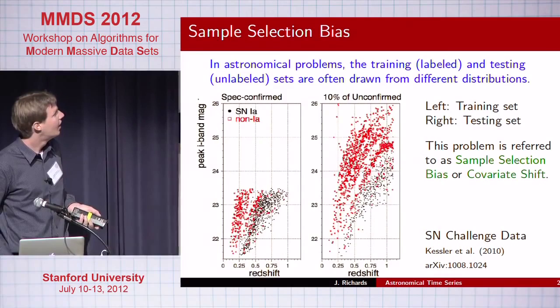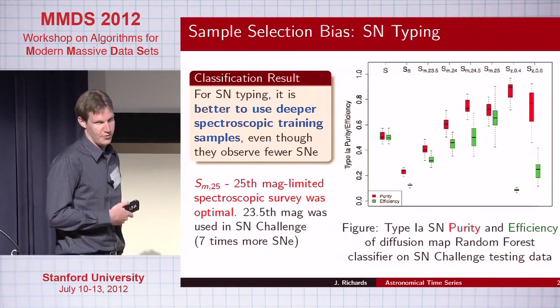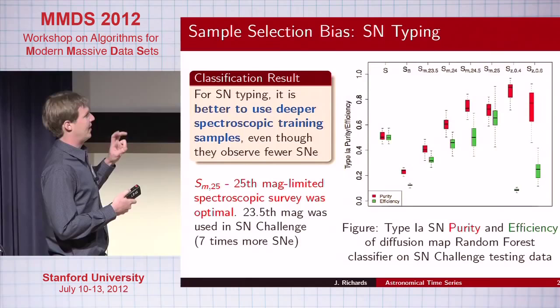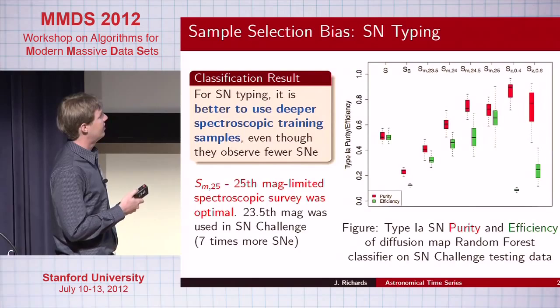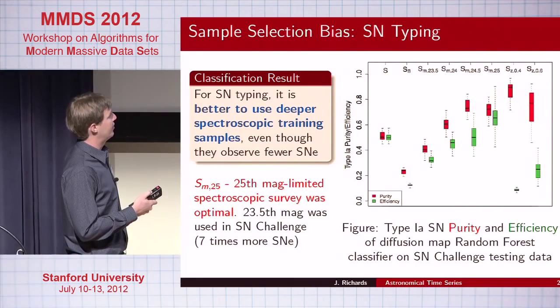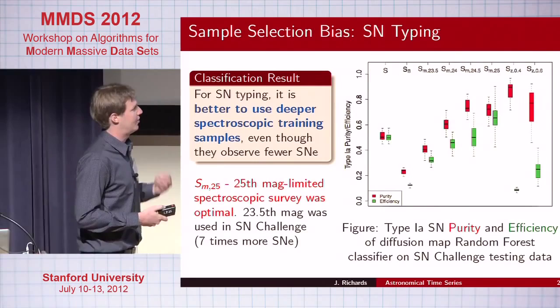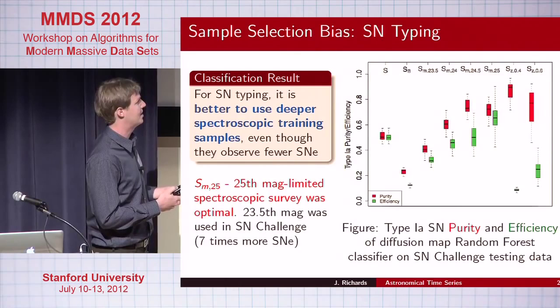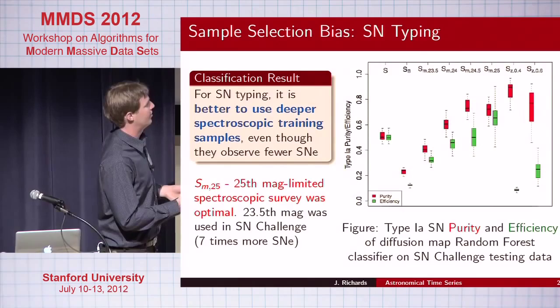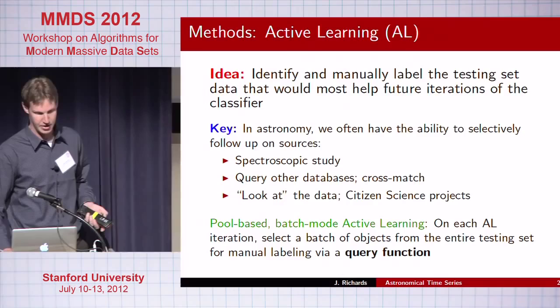We show with this dataset that if you assume a fixed amount of spectroscopic follow-up time and run different spectroscopic surveys with different magnitude limits — going to fainter and fainter objects as you move right — you actually get better performance in purity and efficiency with the fainter limits, even though you're observing much fewer objects. Your training set size may be a seventh of the size, but your performance in purity and efficiency is much higher.